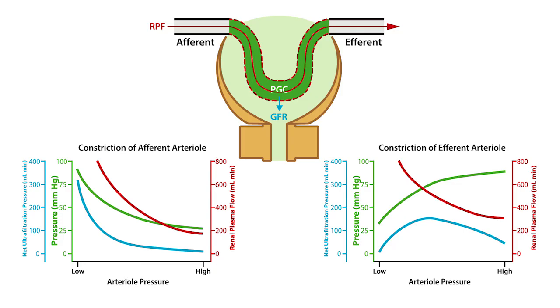However, with increasing efferent arterial resistance, we see a paradoxical decrease in GFR, or net ultrafiltration pressure, which is due to the increase in net oncotic pressure, which is directly related to increases in the filtration fraction.